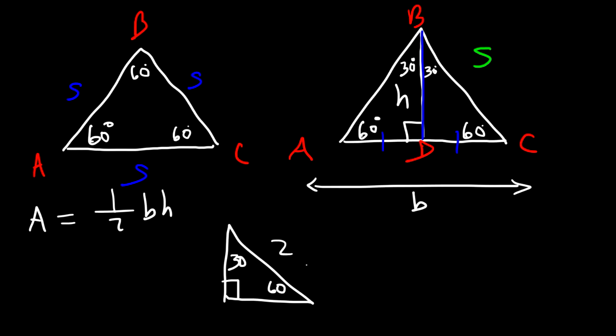Let's say the hypotenuse is 2. Across the 30 degree angle, that side is going to be one half of the hypotenuse. Half of 2 is 1. Now for the side across the 60 degree angle, it's going to be whatever this number is times the square root of 3. So let's apply that to this triangle.